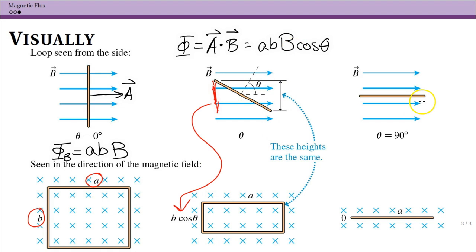If we turn it all the way so that none of these arrows are going through the loop, this is a theta of 90 degrees. Cosine of 90 is zero. You have zero flux in this situation. The takeaway from this is be able to identify situations where you have zero flux. Be able to identify situations where you have maximal flux at theta equals zero. And then, in all other situations, you can just use this area times magnetic field times cosine theta.